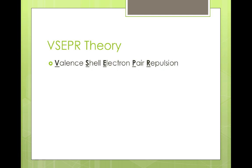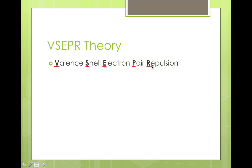The term VSEPR, spelled very strangely, is actually an acronym that stands for valence shell electron pair repulsion. We'll talk about this theory in two separate parts — the valence shell part first and the electron pair part second — but all of them deal with the concept of repulsion, which is the key idea behind how this theory works.